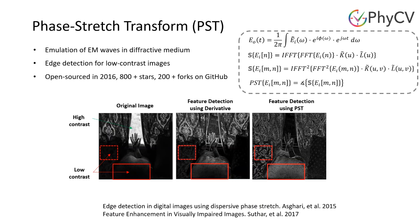Phase Stretch Transform, PST, is the first algorithm for digital image processing that is derived from photonic time stretch. In PST, we have a virtual diffractive medium that applies a nonlinear frequency-dependent phase onto the frequency domain of the image, with higher amount of phase applied to higher frequency features. Since sharp transitions such as edges and corners contain higher frequencies, by detecting the phase of the output, PST extracts the edge information.